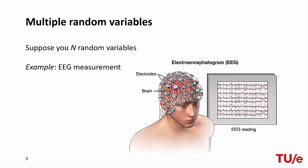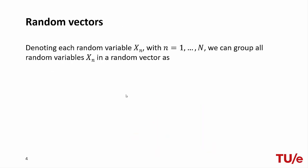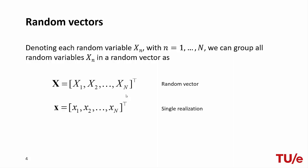This is done by placing multiple electrodes on the scalp, and each of these electrodes records the electrical activity on a different channel. Each of these channels can be considered as a different random variable. Random vectors provide a convenient way to describe multiple random variables.